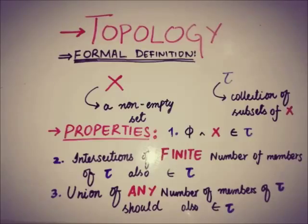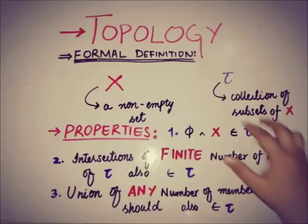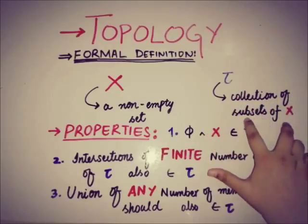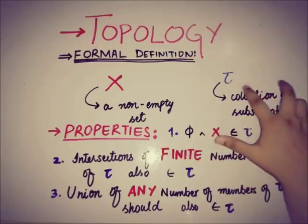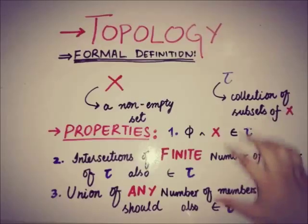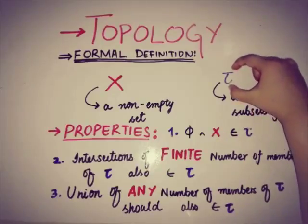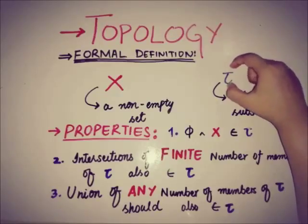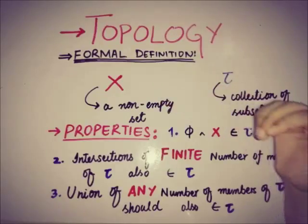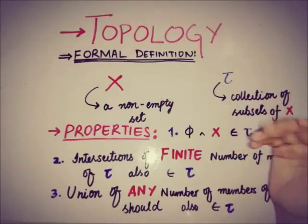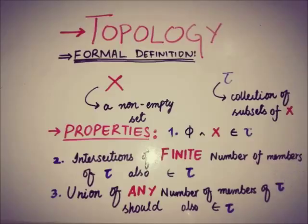If all of these properties are satisfied by the members of tau — that is, the collection of subsets of X — then we can say that tau is a topology on X.